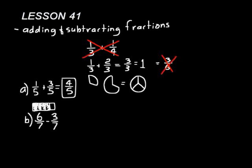Look at problem B — we have a subtraction problem here. Six-sevenths minus three-sevenths. So we do six minus three is three, and the denominator stays the same: three-sevenths. If we took three-sevenths from six-sevenths, we'd end up with three-sevenths.